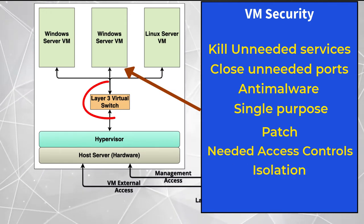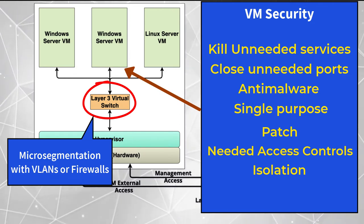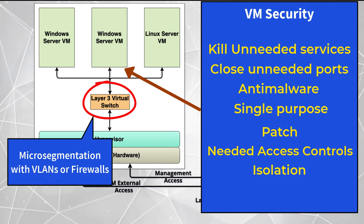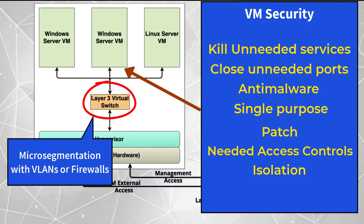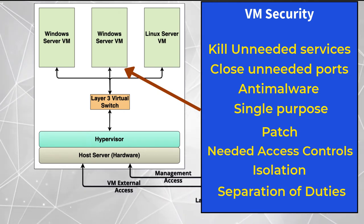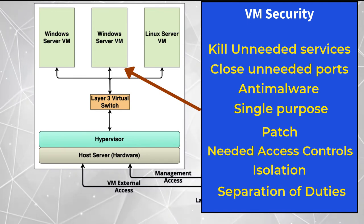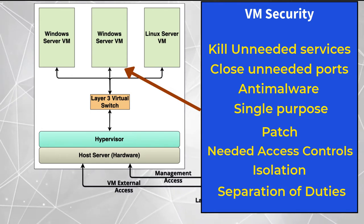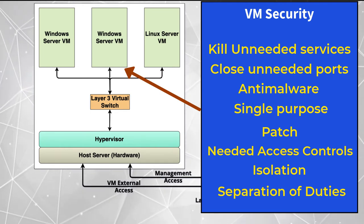Each VM should be isolated from communicating with other VMs on the same host. This is easily done with virtual solutions like Layer 3 switches and firewalls that enforce micro-segmentation. Separation of duties should include only allowing admin access to each VM based on business need — hypervisor admins do not need VM admin access, and VM admins do not need hypervisor admin access.